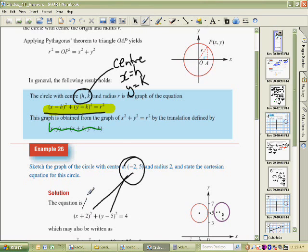We would be writing, if x is minus 2 here, if the centre of the circle is at minus 2, you would be writing x minus, that's that minus there, the h value. What's the h value? Minus 2.